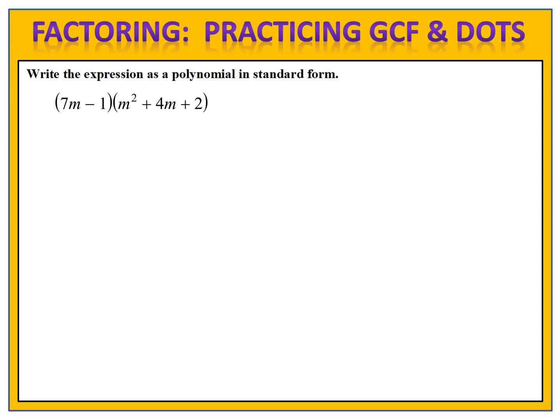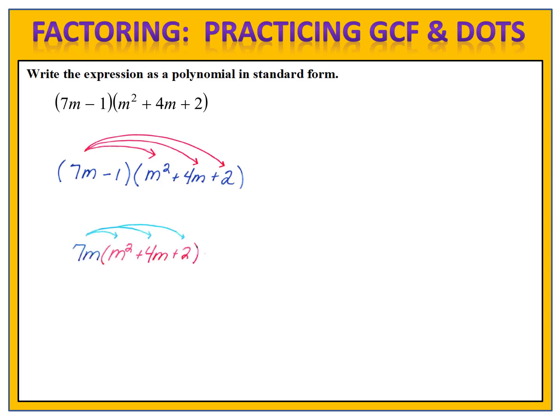Alright, let's see how you did. We begin by copying the problem down. We notice that the operation between these two polynomials — first a binomial and second a trinomial — is multiplication. When we're multiplying, we must use the distributive property. So we'll distribute the 7m to the m² plus 4m plus 2, and then we'll distribute the minus 1 to the m² plus 4m plus 2.